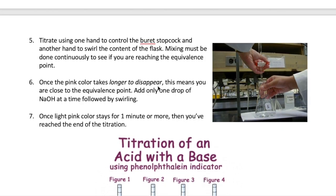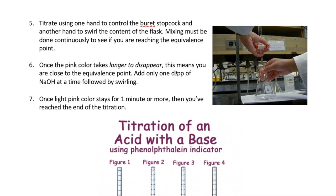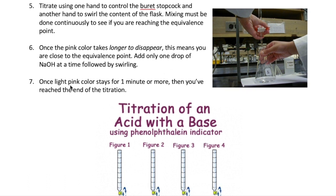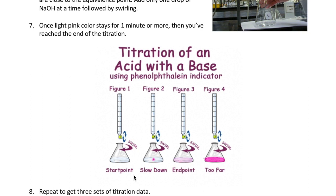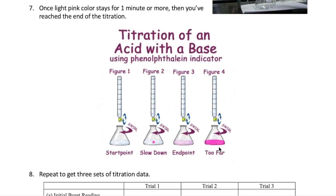You'll know you're getting close to the equivalence point when the pink color from added NaOH takes longer to disappear upon swirling. At that point, open the stopcock to add only one drop at a time, then swirl. When adding one drop produces a light pink color that doesn't disappear after swirling and persists for one minute or more, you've reached the endpoint. If you add too much NaOH, you'll get a very dark pink color, indicating you've gone too far.